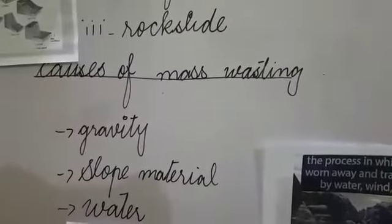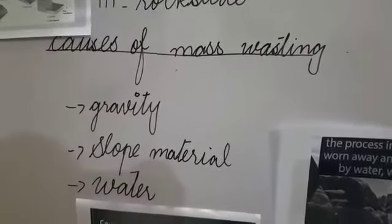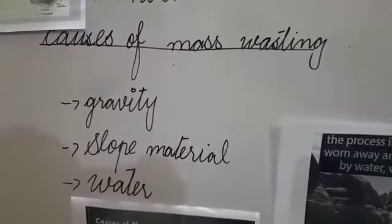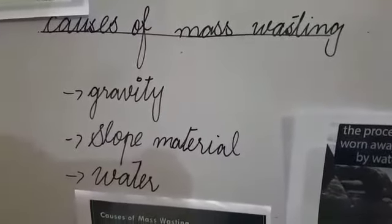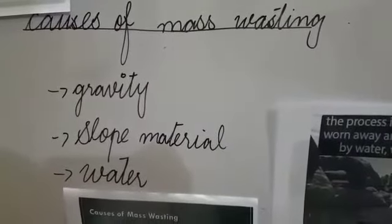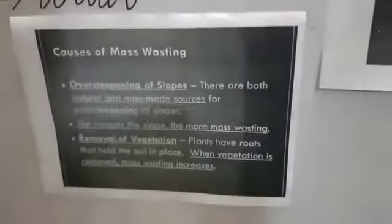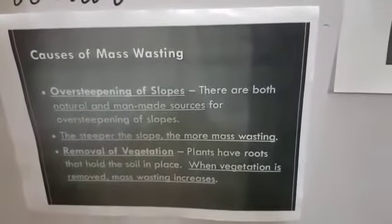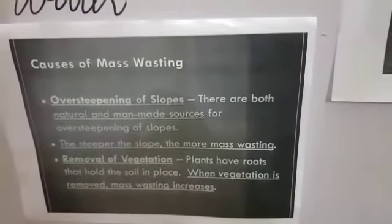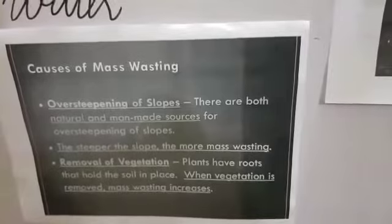The next one is the causes of Mass Wasting. Gravity, slope material and water are the causes of Mass Wasting. There are some other causes of Mass Wasting: oversteeping of slopes, removal of vegetation.